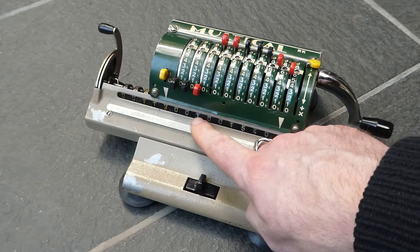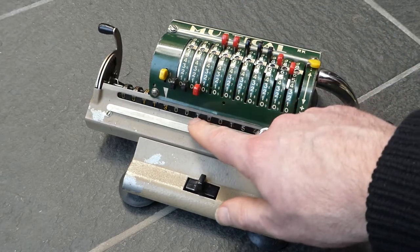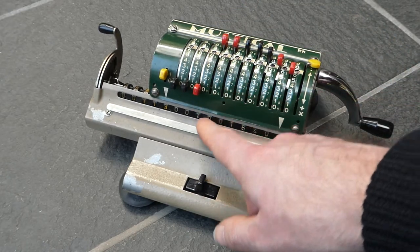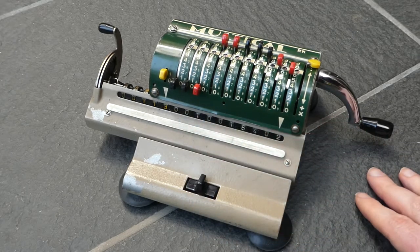You have to ignore this overflowing 1 here. You just have to ignore that. There's no carry suppression buttons on this machine. There's no way to get rid of that one.